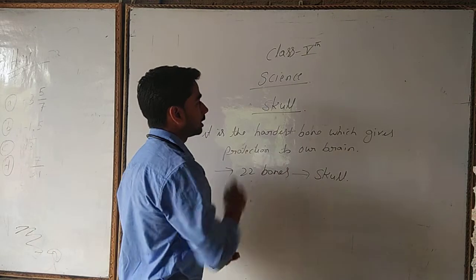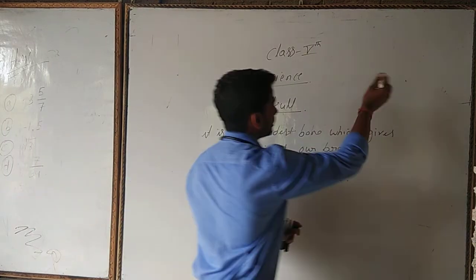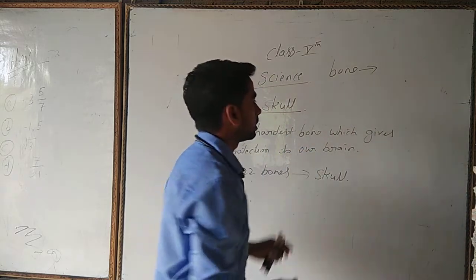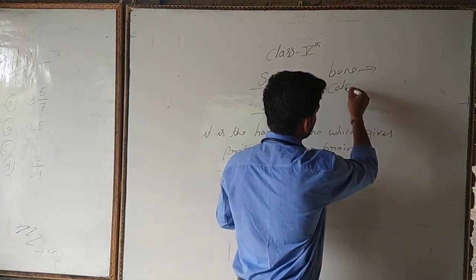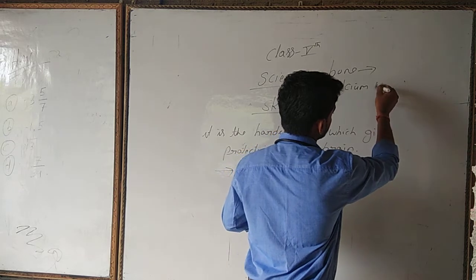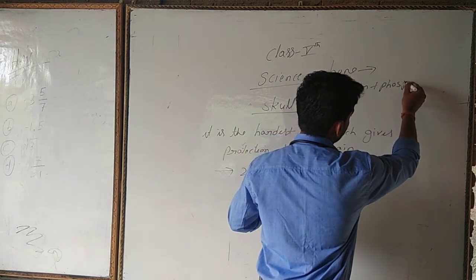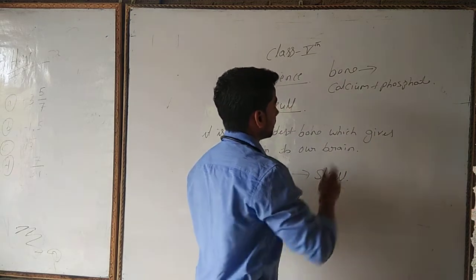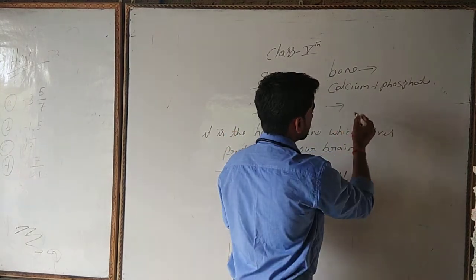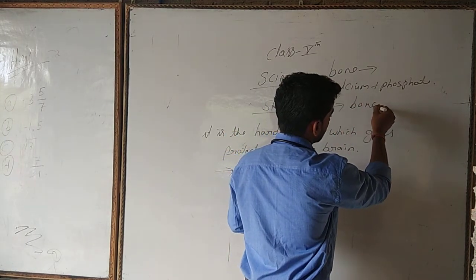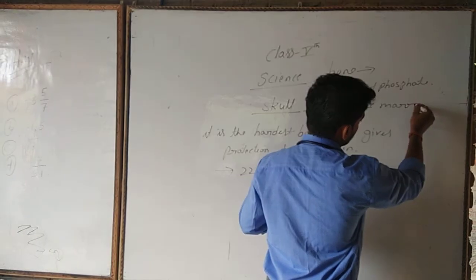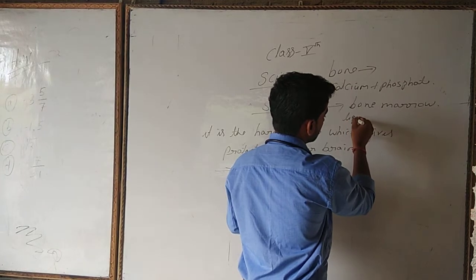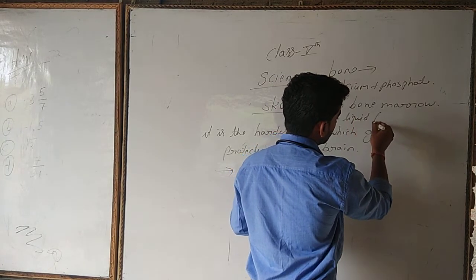Before this, one more important thing is about bone composition. Bone is made up of calcium plus some phosphate. These are the elements that we have to study later. Inside bone, there is bone marrow, which is in liquid form.